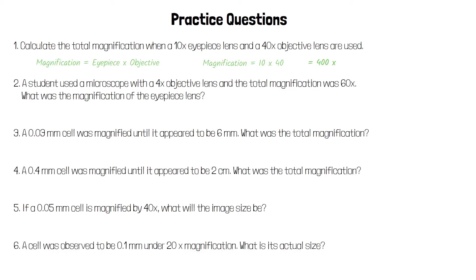We use the same equation for the second question: magnification equals eyepiece times objective. The magnification is 60 and the objective magnification is 4 times. So 60 equals eyepiece times 4. Which means that 60 over 4 gives us the eyepiece magnification, and that's 15 times.